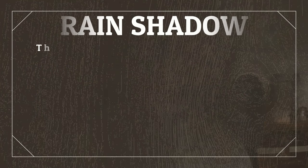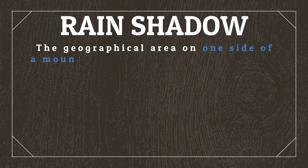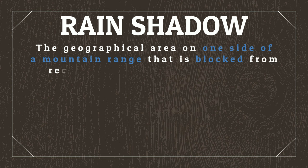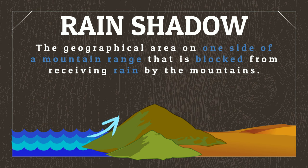Before we discuss where to place deserts on the map, we first need to understand rain shadows. A rain shadow is the geographical area on one side of a mountain range that is blocked from receiving rain by the mountains. As wind blows onshore from the ocean, it brings with it moisture, which is distributed across the land, usually in the form of rain.